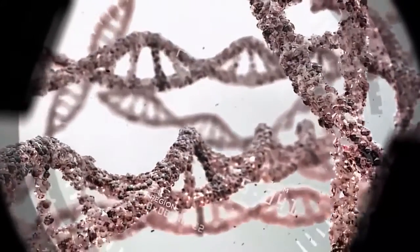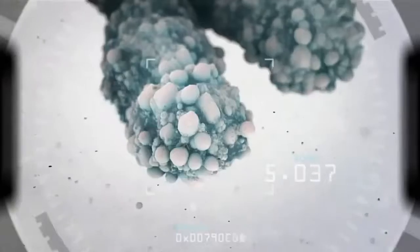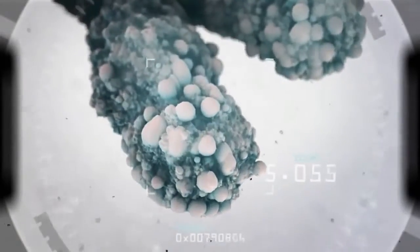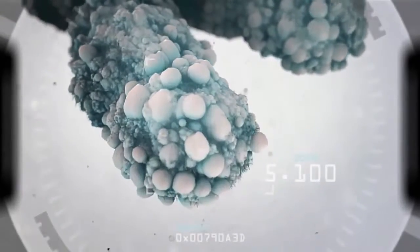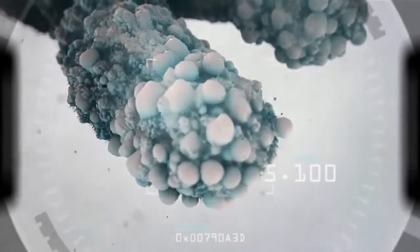Telomeres are made of repetitive DNA sequences that become the protective caps or ends of our chromosomes. Their duty is to protect our DNA.